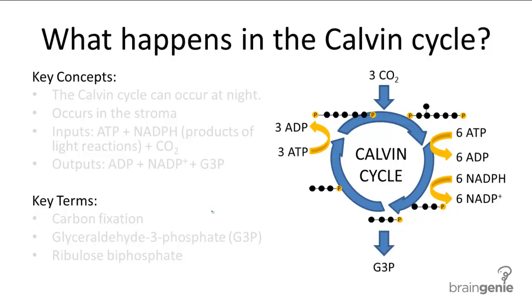Like cellular respiration, photosynthesis has its own cycle process, and it's called the Calvin cycle, not to be confused with the Krebs cycle. This is the part of photosynthesis that performs carbon fixation.